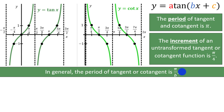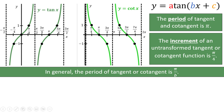Note that this is different from when we had a sine or cosine function. Sine and cosine have periods of 2pi, so in order to find the transformed period, we took 2pi and divided by b. Since the untransformed period of tangent or cotangent is pi, we instead take pi and divide by b, so make sure to not get that mixed up.